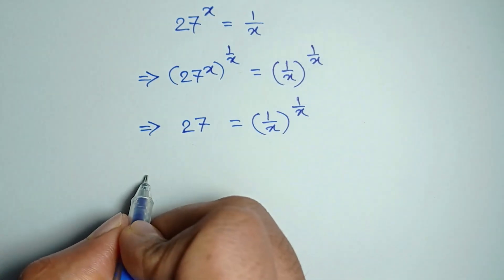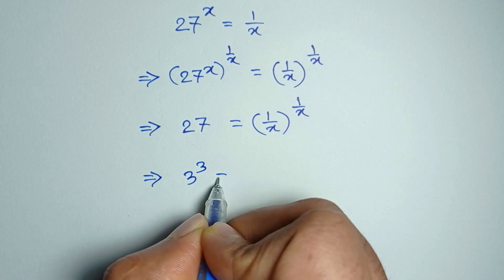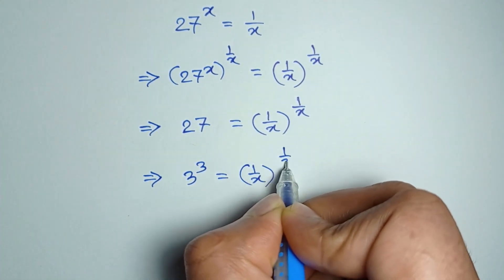27 can be written as 3 to the power 3 is equal to 1 divided by x whole to the power 1 by x.